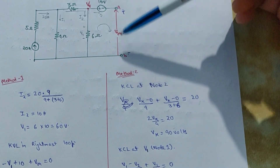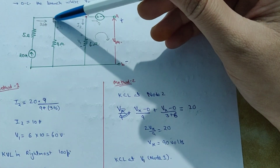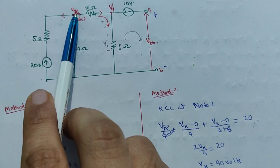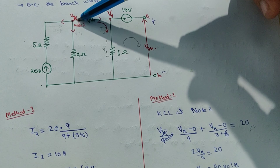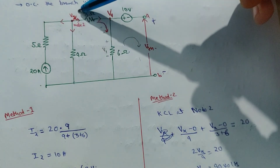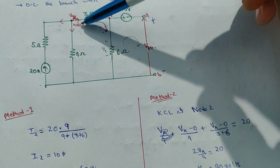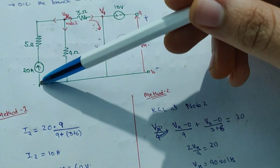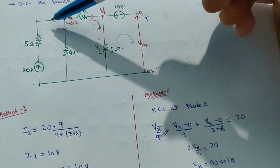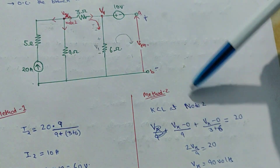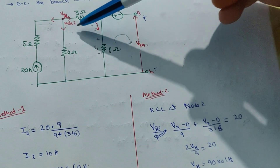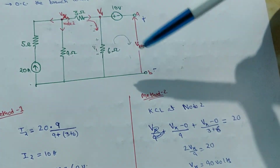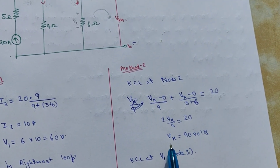Now I have calculated VTH using another method: KCL. I have applied KCL at node 2, assuming the voltage at node 2 is VX. KCL states that the sum of all currents going in or out at a node equals zero. Assuming all currents are going outward: the current in one branch is VX minus 0 divided by 9, plus the current in the other branch, plus minus 20 equals zero. Solving for VX gives 90 volts.